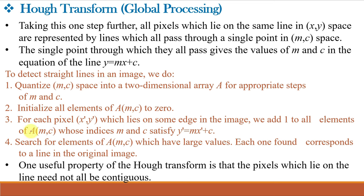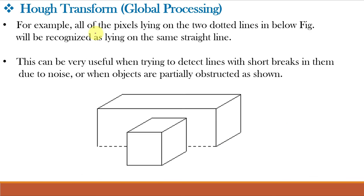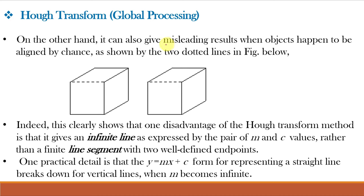For detecting straight lines we follow these steps. One useful property of the Hough transform is that pixels which lie on the line need not all be contiguous — pixels on two dotted lines with short breaks due to noise or partial obstruction will be recognized as lying on the same straight line. However, it can also give misleading results when objects happen to be aligned by chance. A clear disadvantage is that the Hough transform gives an infinite line as expressed by the pair of M and C values, rather than a finite line segment with two well-defined endpoints.